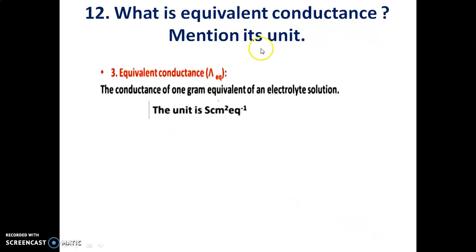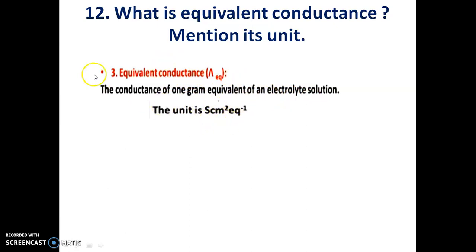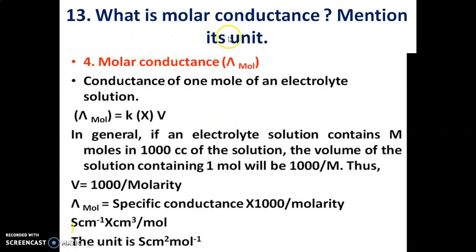What is equivalent conductance? Mention its unit. The conductance of one gram equivalent of an electrode solution is called equivalent conductance. The unit is Siemens centimeter squared per equivalent. The conductance of one mole of an electrode solution is called molar conductance. The unit is Siemens centimeter squared per mole.